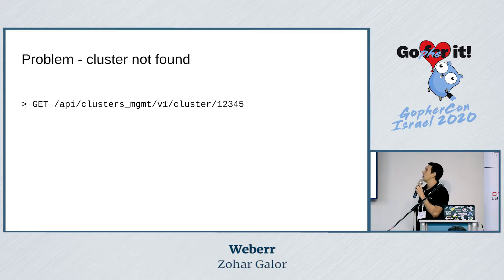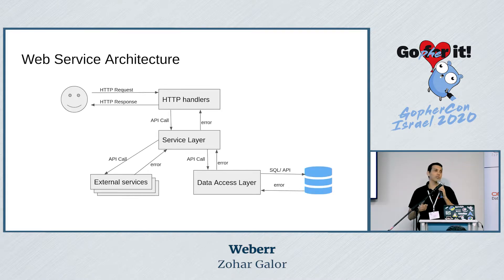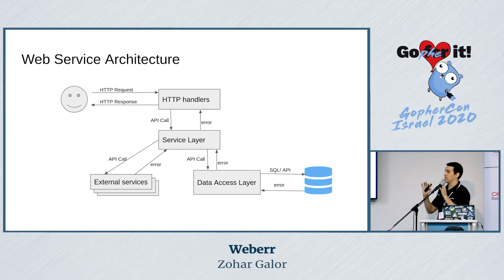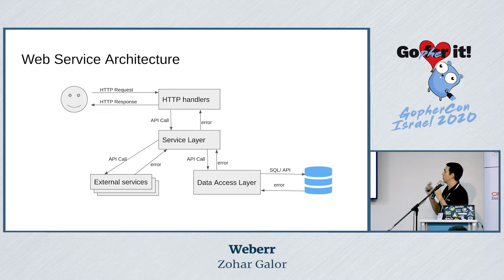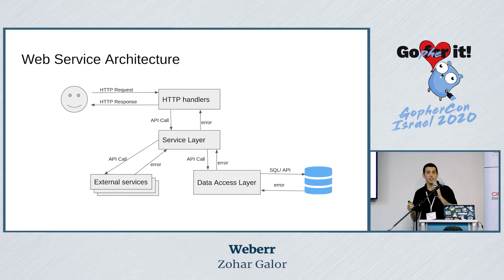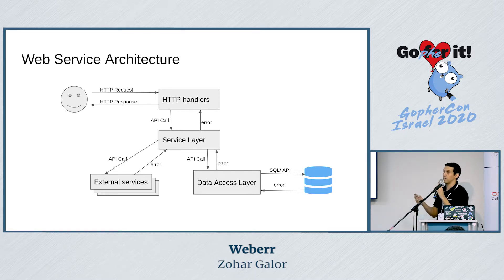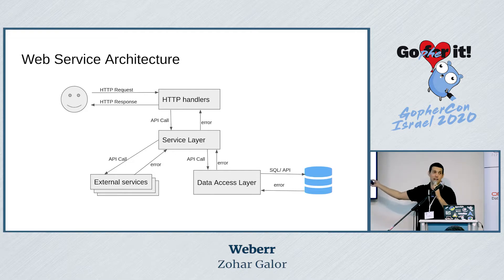Let's look at a use case where a user tries to get a cluster using its ID. In a web service architecture, on top we have the HTTP handlers layer — this layer checks the endpoint, validates the parameters, and does JSON marshaling and unmarshaling. Then the data goes into a service layer where we validate the logic, maybe access external services like an authenticator or Kubernetes. And sometimes we also have a data access layer to manage our data.